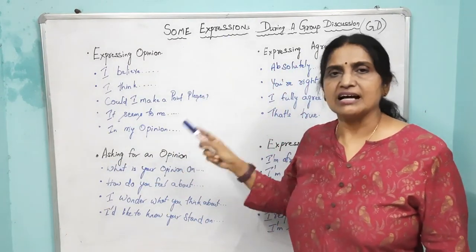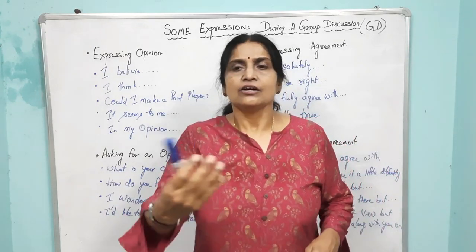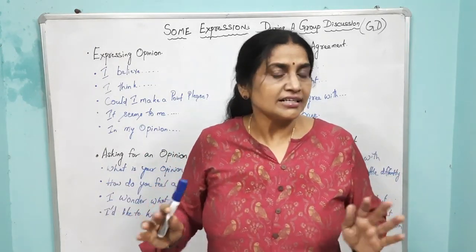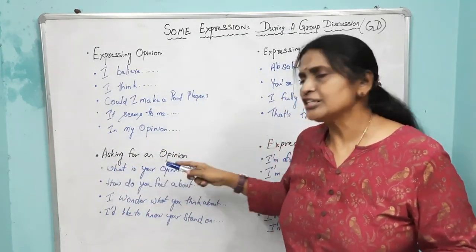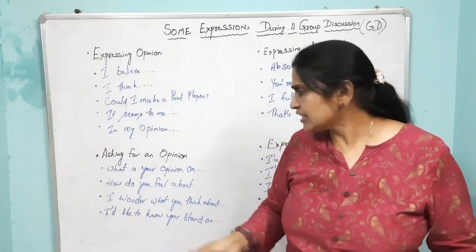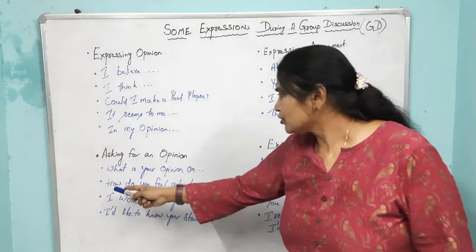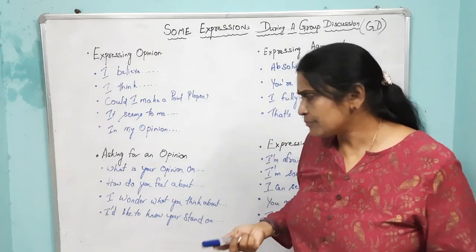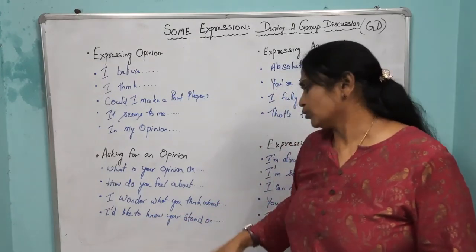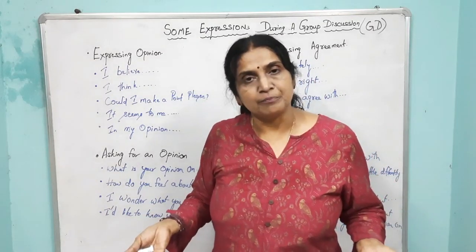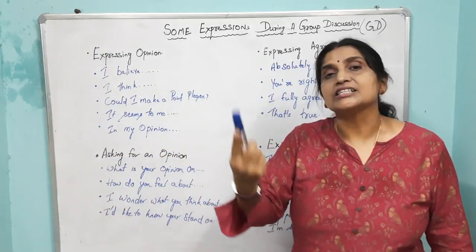Suppose asking for an opinion — you are trying to get others' opinions. You cannot just say 'you tell me what is your opinion.' It's a group discussion and people are observing you. So, how you have to ask: 'What is your opinion on child labour?' or 'How do you feel about child labour?' or 'I wonder what you think about child labour?' or 'I'd like to know your stand on child labour.'